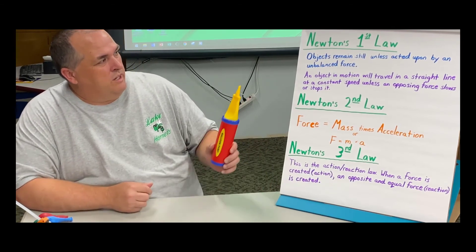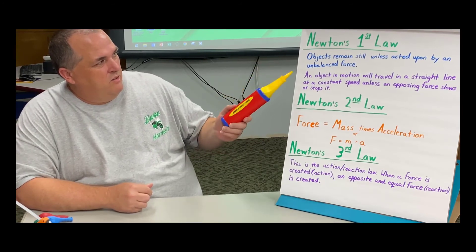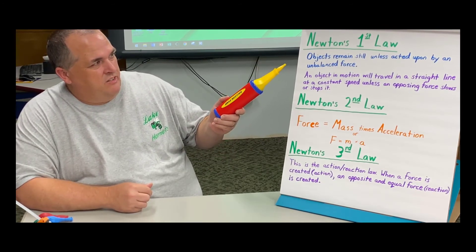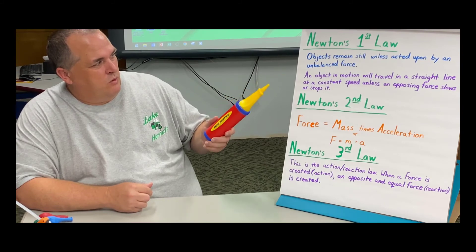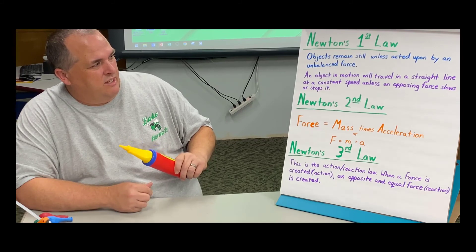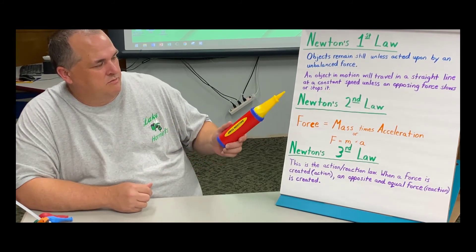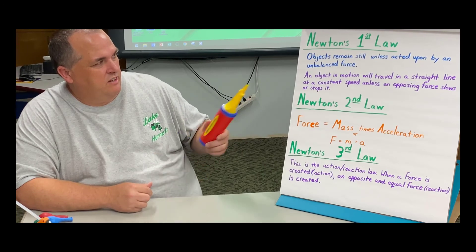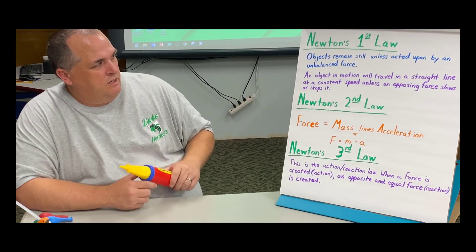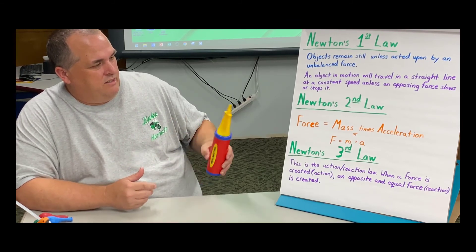So we covered Newton's first law, where the object remains still unless acted upon by the unbalanced force. It covered an object in motion will travel in a straight line at a constant speed unless an opposing force slows or stops it, which the friction and the lack of unbalanced force with the air escaping. When it ran out, it did stop.